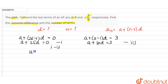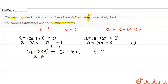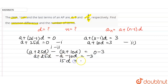Equation 1 minus equation 2: (a + 25d) - (a + 10d) = 0 - 3. So a - a = 0, and 25 - 10 = 15, giving us 15d = -3. Therefore d = -3/15, which simplifies to -1/5.